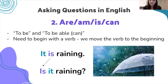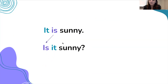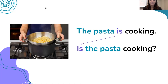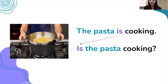Some more examples: 'is it sunny?' and 'the pasta is cooking' becomes 'is the pasta cooking?' This is important because in Portuguese the order does not change — you can say 'a pasta está cozinhando' as a statement or a question. But in English this change is very important. You cannot say 'the pasta is cooking' as a question. It is very common to make this mistake — 'is the pasta cooking?' You need to start with the verb.